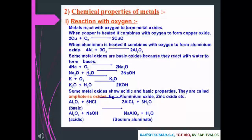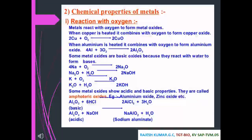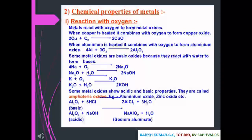Chemical properties of metals — reaction with oxygen: metals react with oxygen to form metal oxides. When copper is heated, it combines with oxygen to form copper oxide. For aluminium: 4Al + 3O₂ gives 2Al₂O₃.